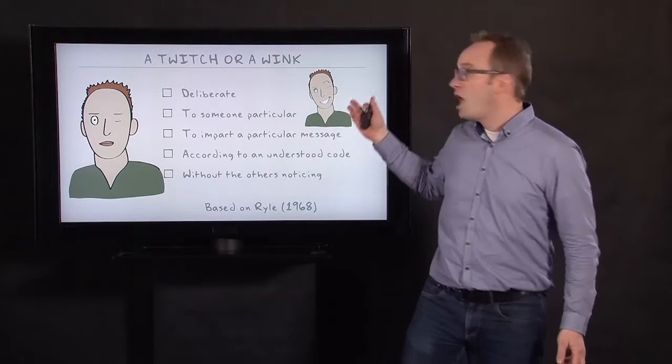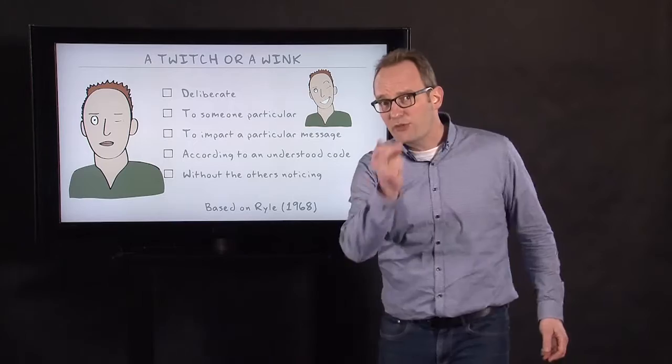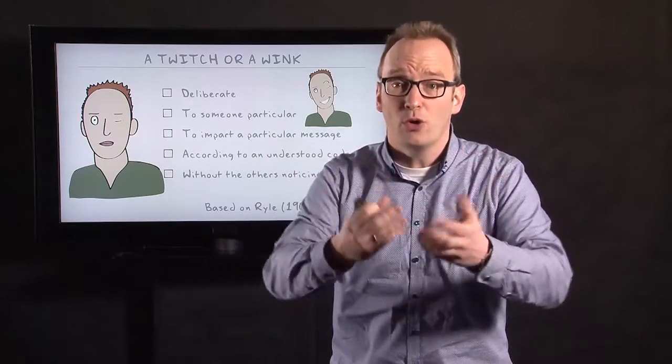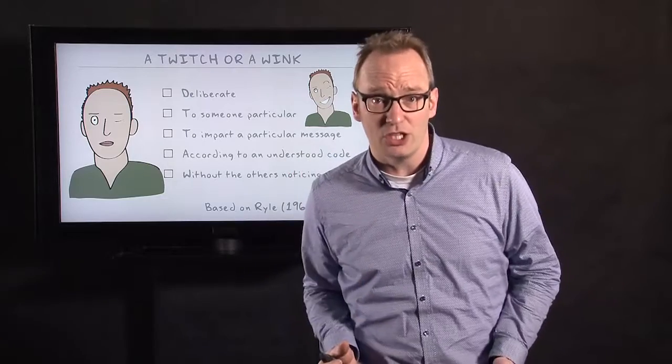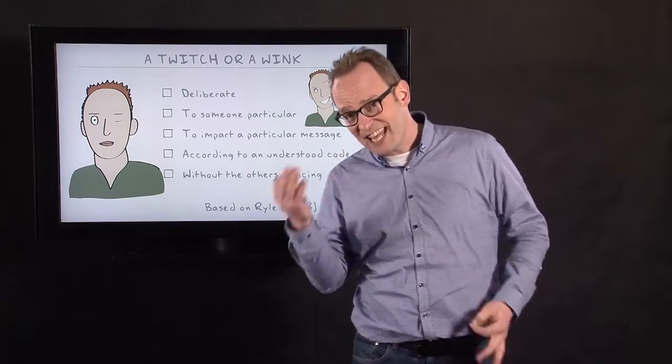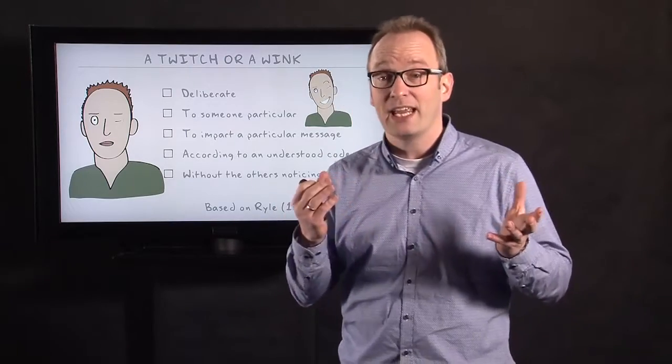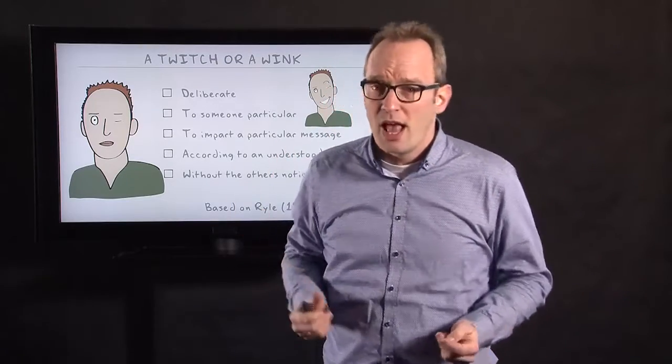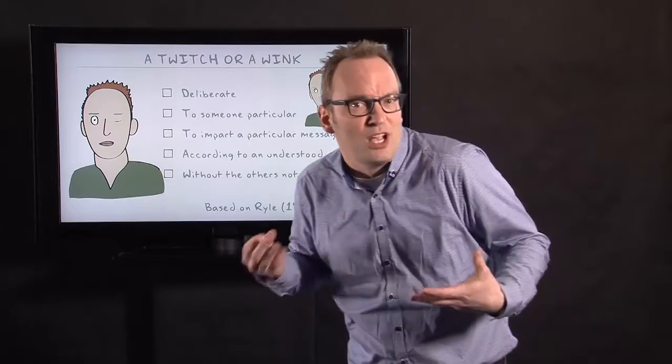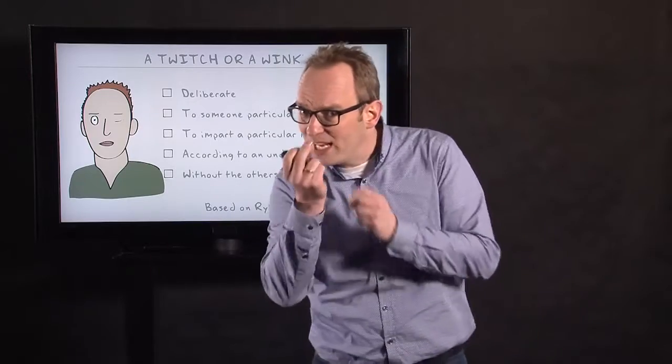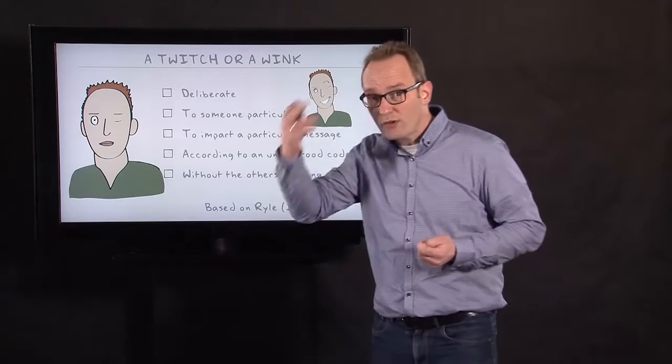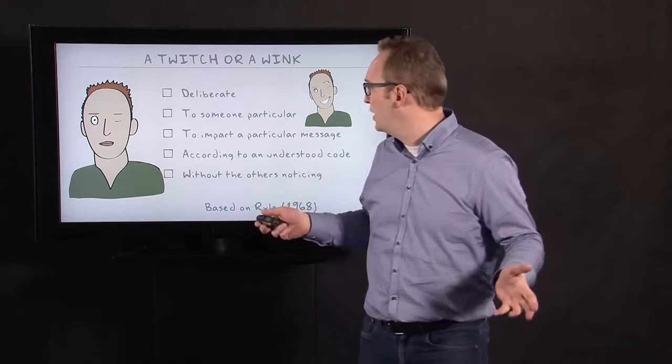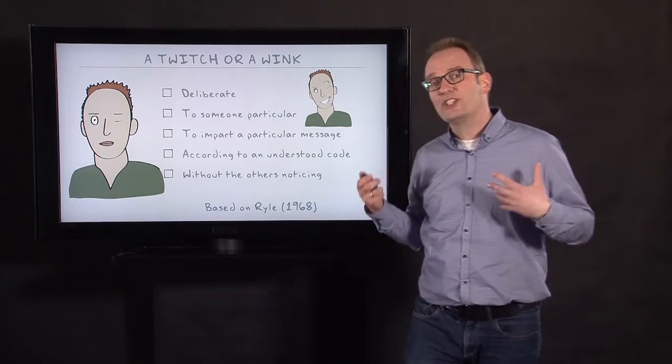If we make a distinction between the twitch and the wink: a wink is deliberate, focused on someone in particular, and why? Because you want to impart a particular message and the other one has to understand what you mean with this winking. So he or she needs to understand the code, and the others should not notice this because otherwise you could have said it. A wink is very private, conveying a code in privacy. That's the difference between a twitch and a wink.